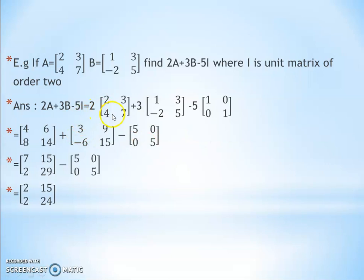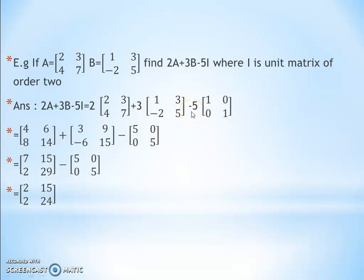Now multiply the scalar 2 with each element of A: 2×2=4, 2×3=6, 2×4=8, 2×7=14. For 3B: 3×1=3, 3×3=9, 3×(-2)=-6, 3×5=15. For the identity matrix, multiply 5 with each element: 5×1=5, 5×0=0, 5×0=0, 5×1=5. Note: keep the minus sign as-is; multiply only the positive scalar 5 with each element.